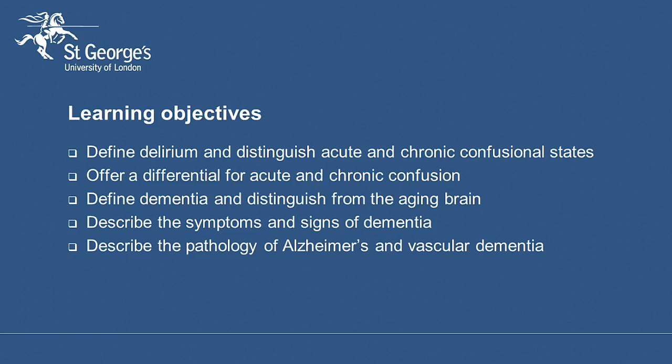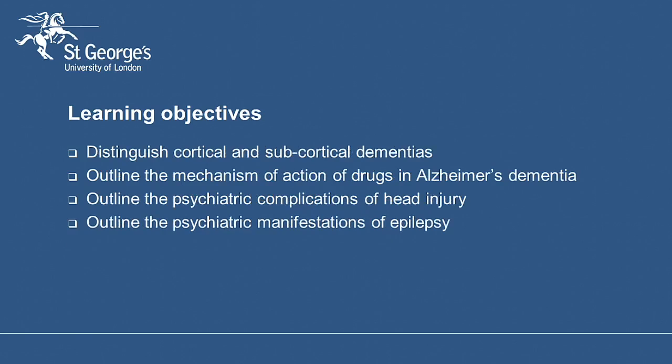Here are our learning objectives. I'll be defining delirium and distinguishing between the acute and chronic confusional states. I'll offer a differential for acute and chronic confusion and define dementia and distinguish this from the normal ageing brain. I'll be describing the symptoms and signs of dementia and describing the pathology of Alzheimer's and vascular dementia in particular. Next we'll move on to consider the difference between cortical and subcortical dementias and outline the mechanism of action of drugs in Alzheimer's dementia.